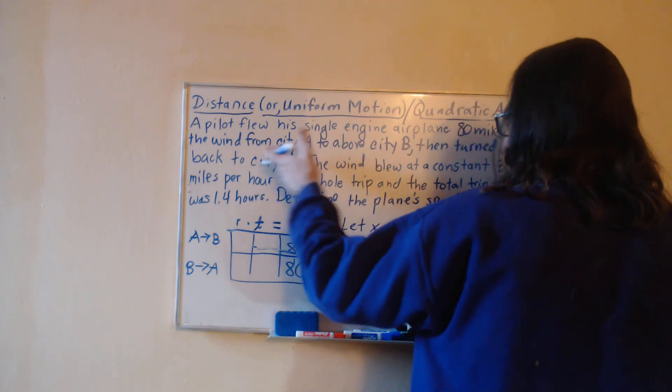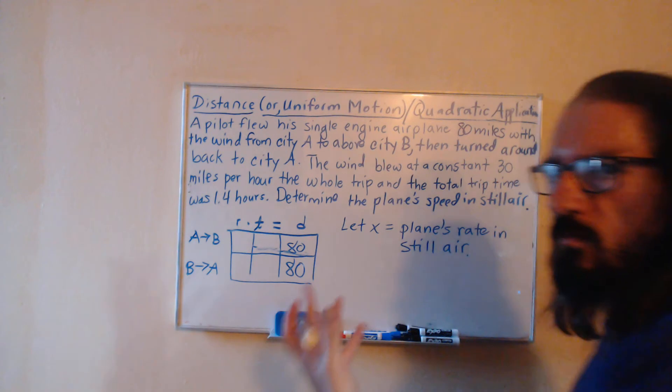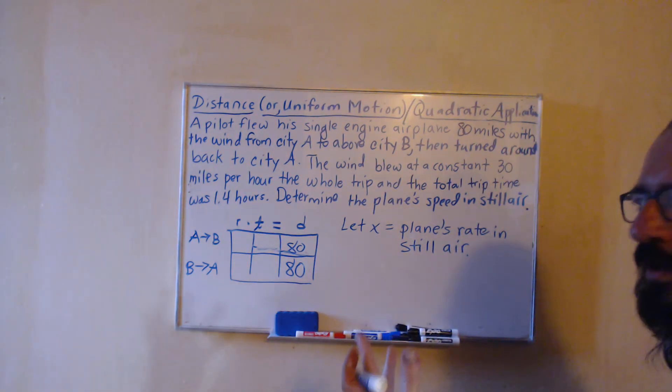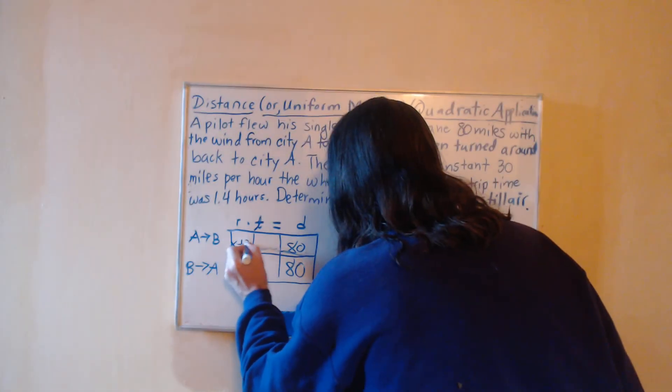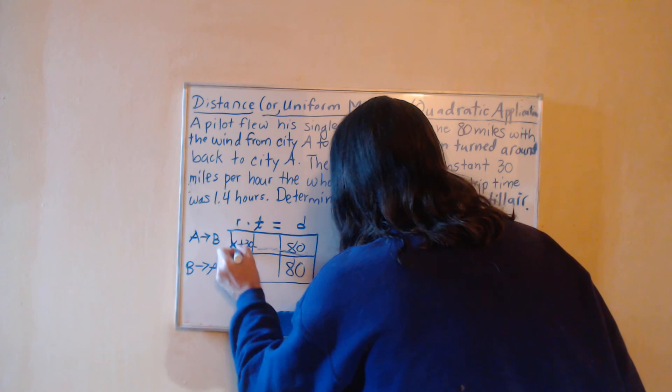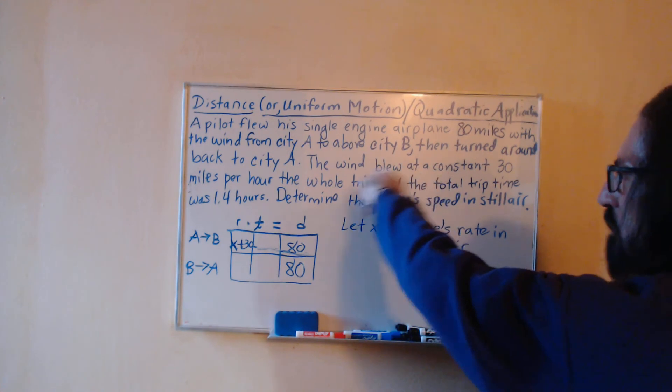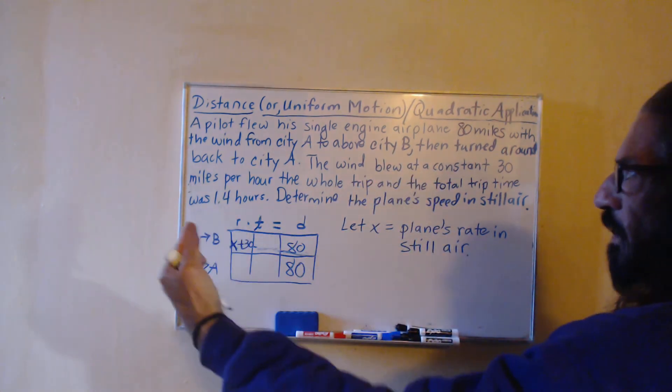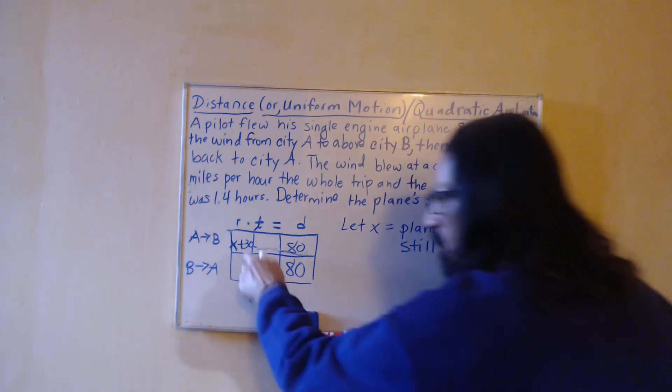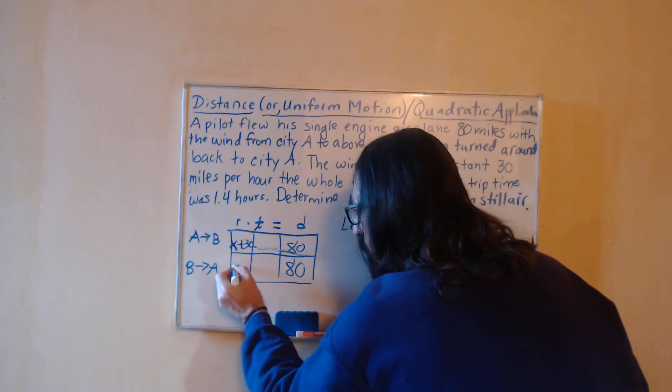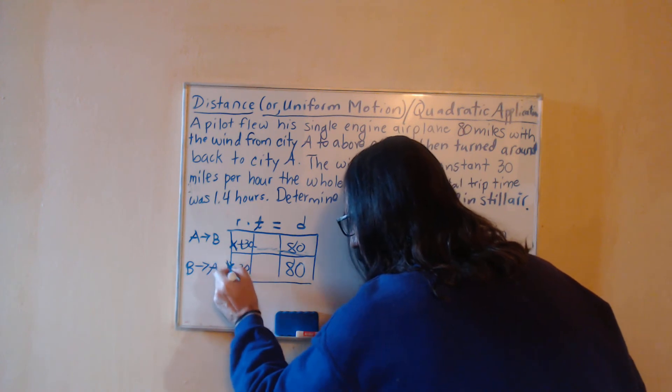The trip from A to B was with the wind, so the wind is blowing in the same direction as the flight of the plane, so it's speeding up the plane. It's going to add 30 miles per hour. Although it doesn't say it explicitly, you also have the wind still blowing in that same direction from city A to city B, fighting against the plane, slowing it down, switching that operation to subtraction when going back from city B to city A.